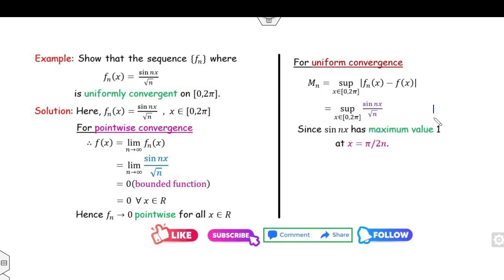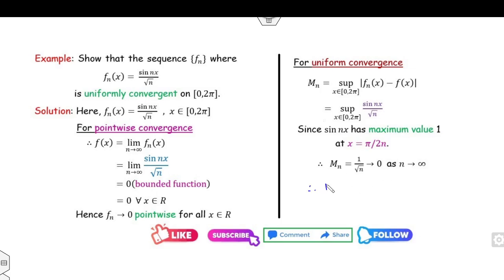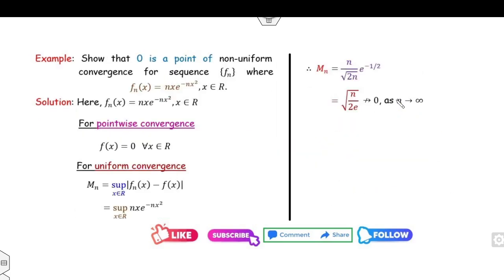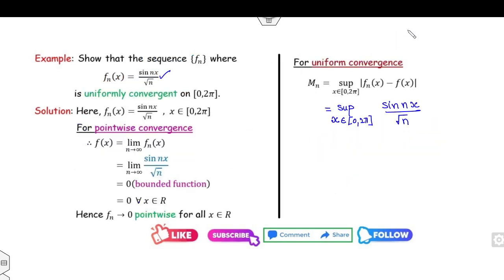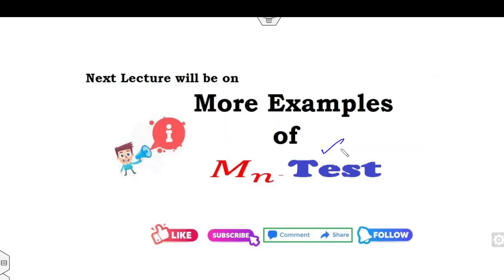Substituting x = π/(2n) into sin(nx)/√n gives sin(π/2)/√n = 1/√n. Therefore MN = 1/√n, which clearly goes to 0 as n → ∞. By the MN test, the sequence of functions fn converges to f uniformly. You can use the first derivative equal to zero and then apply the first derivative test for more general examples. In the next lecture I will explain ten more examples in detail.